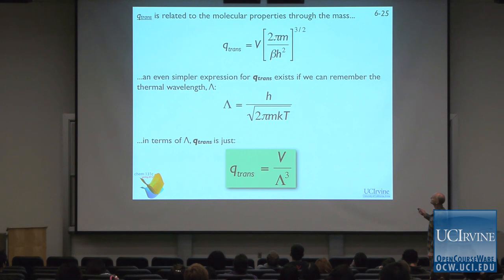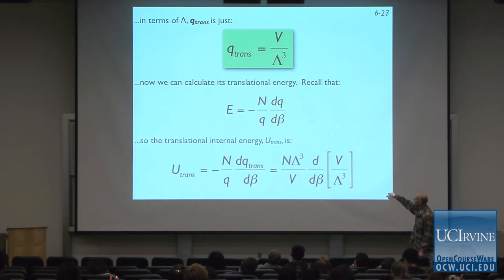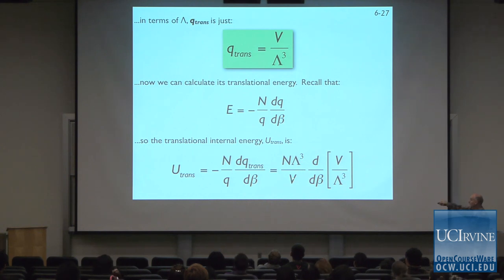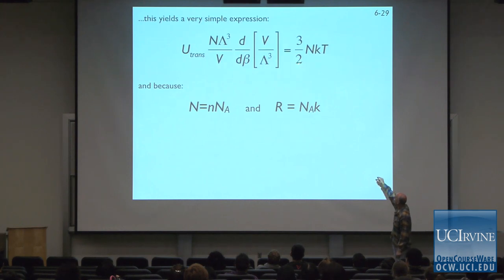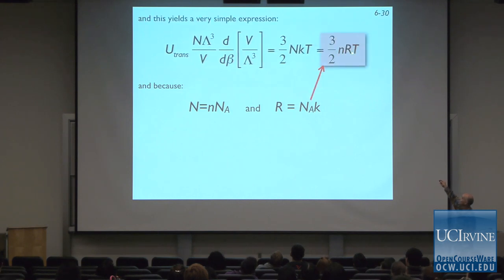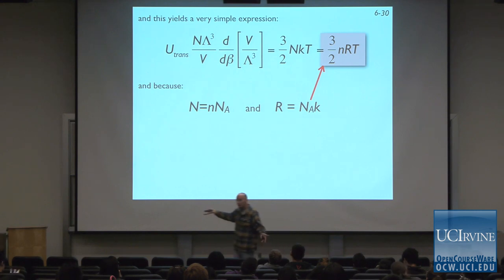We can simplify this expression in terms of the thermal wavelength, as we discussed. Then we calculate the translational contribution to internal energy using our earlier expression for the energy. Substituting V over the thermal wavelength cubed and working through the derivative, we find that the internal energy due to translation is 3/2 NkT, which is just 3/2 NRT. This is exactly the internal energy we had been assuming from the equipartition theorem — it's a proof that that result is correct.